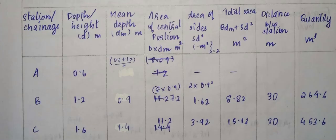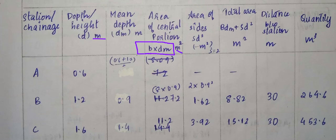Now we set up a table with the following columns: first column — station or chainage; second column — depth or height in meters; third column — mean depth; fourth column — area of central portion, calculated as breadth (B) multiplied by mean depth (dm), in square meters; and the fifth column — area of side slopes.